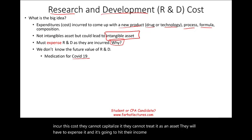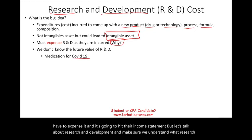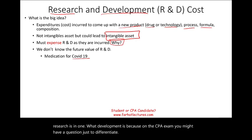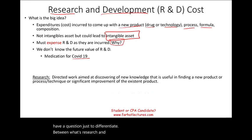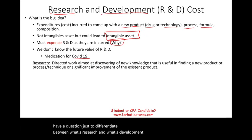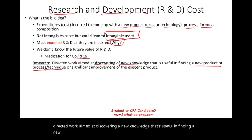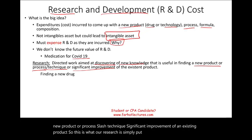Let's talk about research and development and make sure we understand what research is and what development is, because on the CPA exam you might have a question just to differentiate between the two. Research is considered directed work aimed at discovering new knowledge that's useful in finding a new product or process/technique, or a significant improvement of an existing product. A simple example is searching for a new drug.